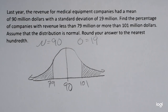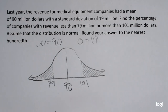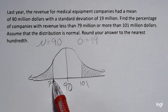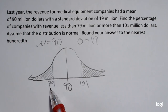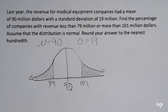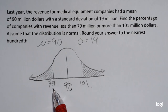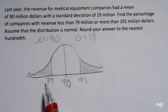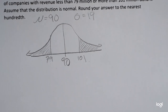Now I want to use my standard normal table for this. Remember, the standard normal table reads cumulatively from negative infinity up to a Z-score. Now these are not Z-scores, so I can't use the table and try to find a Z-score of 79. I have to convert both of these to Z-scores first.